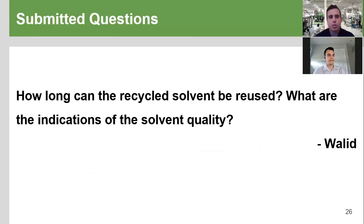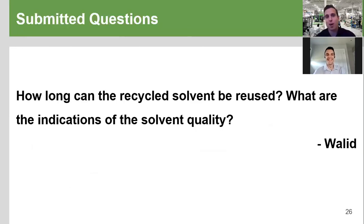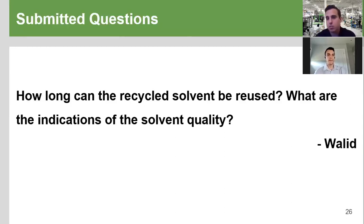A similar question: how long can the recycled solvent be reused and what are the indications of solvent quality? Hopefully we've answered a bunch already. Easiest indications on-site: look at the color and give it a smell — don't stick your head in, just a brief check. Smell and visual inspection are the easiest quick checks. Beyond that, you can send it to a lab for exact testing for small compounds or other things that could be carried over. Color and smell are the main two things — you especially want to avoid darker color contamination, because that means you're carrying over product, which is not good.